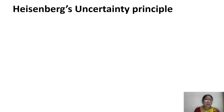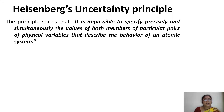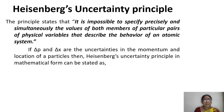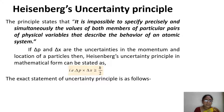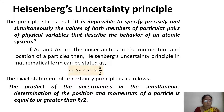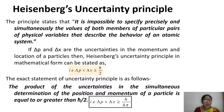What is Heisenberg's uncertainty principle? The principle states that it is impossible to specify precisely and simultaneously the values of both members of a particular pair of physical variables that describes the behaviour of an atomic system. If delta p and delta x represent the uncertainties in the momentum and position of the particle, then according to the Heisenberg uncertainty principle, delta p into delta x is greater than or equal to h-cross by 2, or equivalently, delta p into delta x is greater than or equal to h by 4 pi.